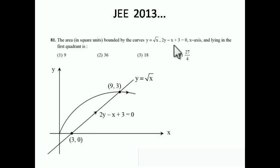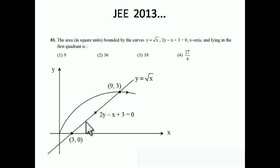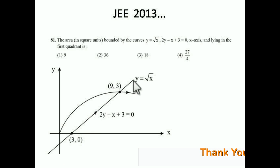The second equation, 2y - x + 3 = 0, is a line. To draw the line, find two points where it intersects the axes. Put y = 0 to get x = 3, giving point (3, 0). Put x = 0 to get y = -3/2, giving point (0, -3/2). Draw the straight line between these two points.